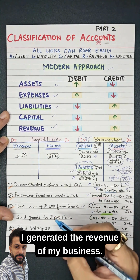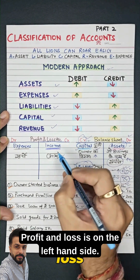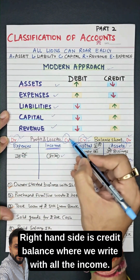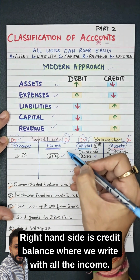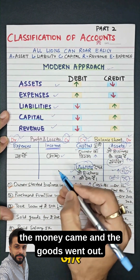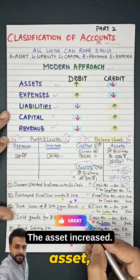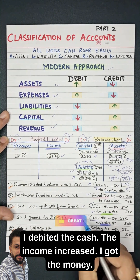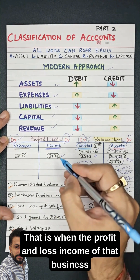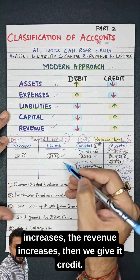Now I sold the goods and generated revenue for my business. Profit and loss is on the left hand side as a debit balance where we write all the expenses; the right hand side is the credit balance where we write all the income. When goods were sold, money came in and goods went out. When the money came, the asset increased, so I debited the cash. The income increased — when revenue of the business increases, we give it credit.